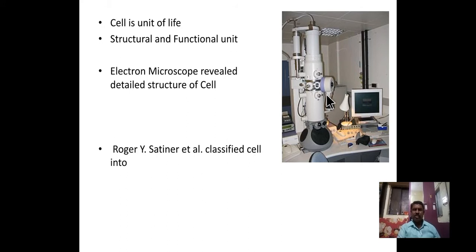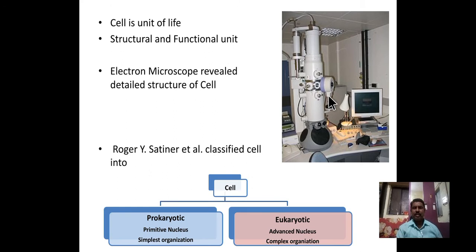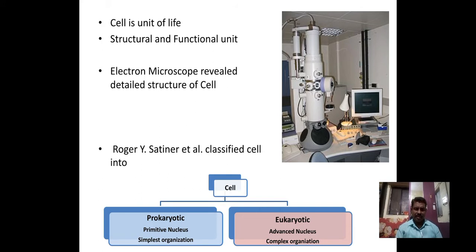The scientist Roger Steiner and associates classified the cell into two types: the prokaryotic cell and the eukaryotic cell. The prokaryotic cell has a primitive nucleus and the eukaryotic cell has an advanced nucleus. This classification is mainly based on the condition of the nucleus.